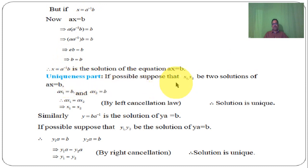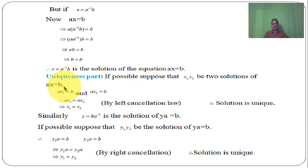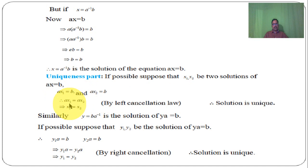Uniqueness: If possible, suppose that X1 and X2 are two solutions of AX equal to B. Then AX1 equal to B and AX2 equal to B. Therefore AX1 equal to AX2. By using the left cancellation law, A cancels and X1 equal to X2. Therefore the solution is unique.